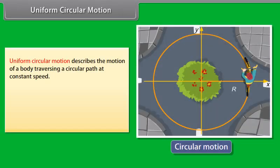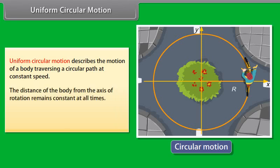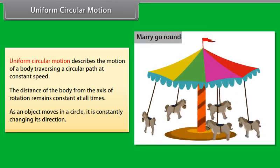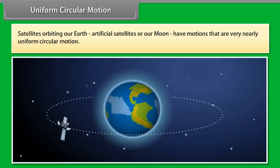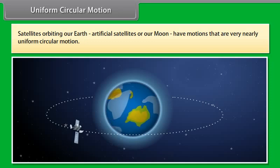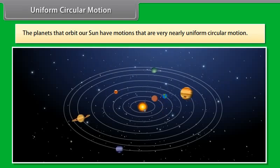Uniform circular motion describes the motion of a body traversing a circular path at a constant speed. The distance of the body from the axis of rotation remains constant at all times. As an object moves in a circle, it is constantly changing its direction. A merry-go-round is an example of uniform circular motion. Satellites orbiting Earth — artificial satellites or the moon — and the planets orbiting the sun also have motions that are very nearly uniform circular motion.